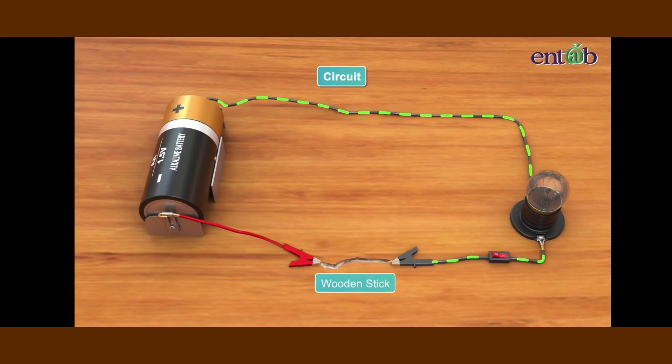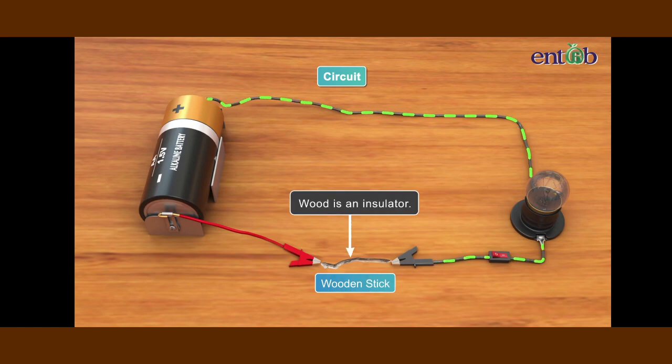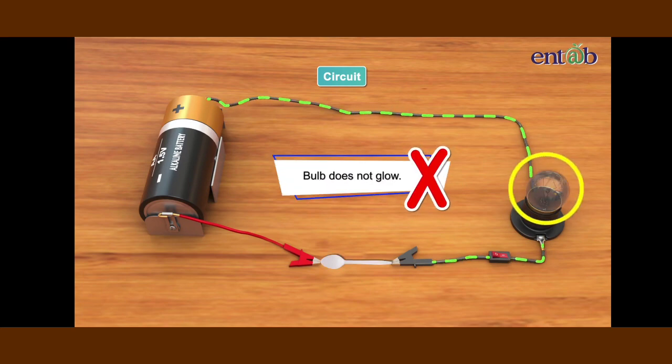Now replace the pencil with a small wooden stick. Now observe the bulb once again. It does not glow because wood is an insulator. It does not conduct electricity.